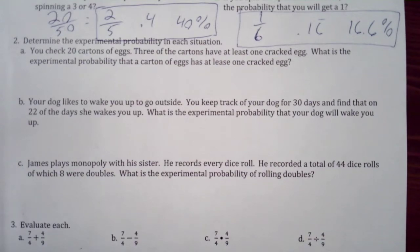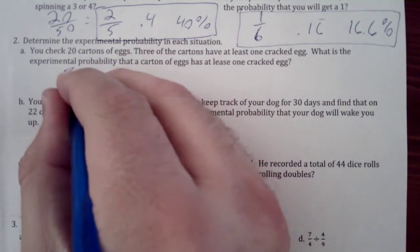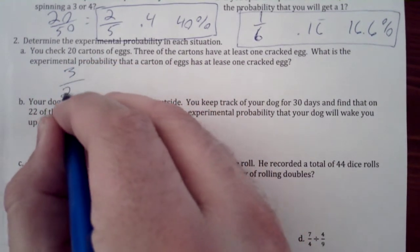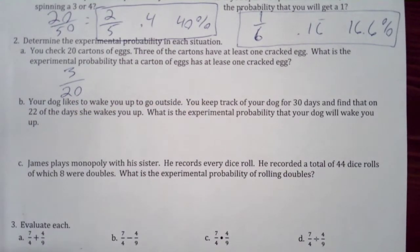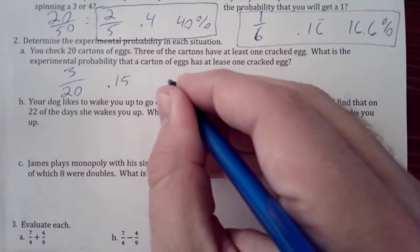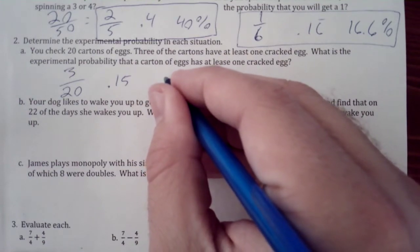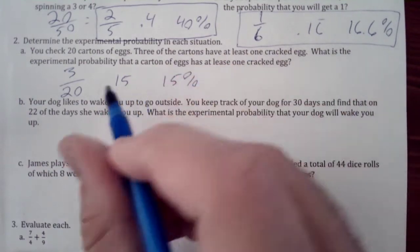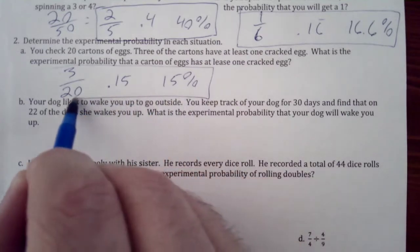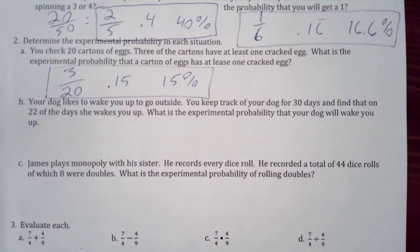So we have three cartons that have at least one cracked egg. And we want to know what the probability of our next carton having a cracked egg is. So we have 3 over 20, which is 0.15 or 15%. So based on our experimental probability, we expect 15% have at least one cracked egg.